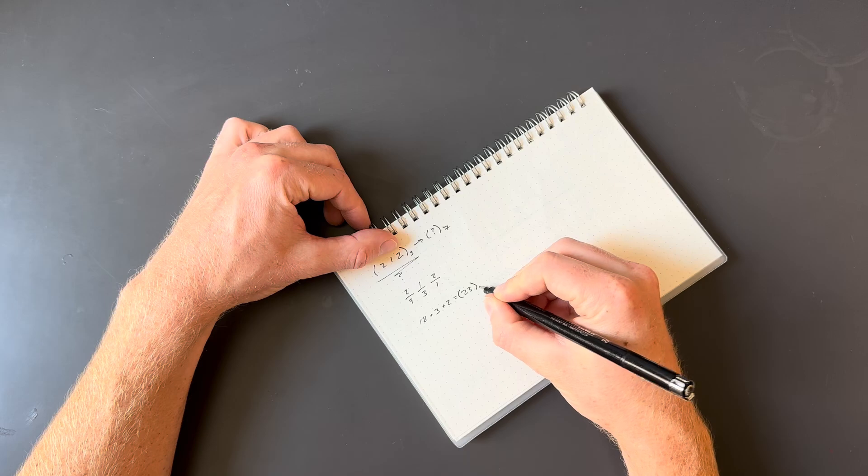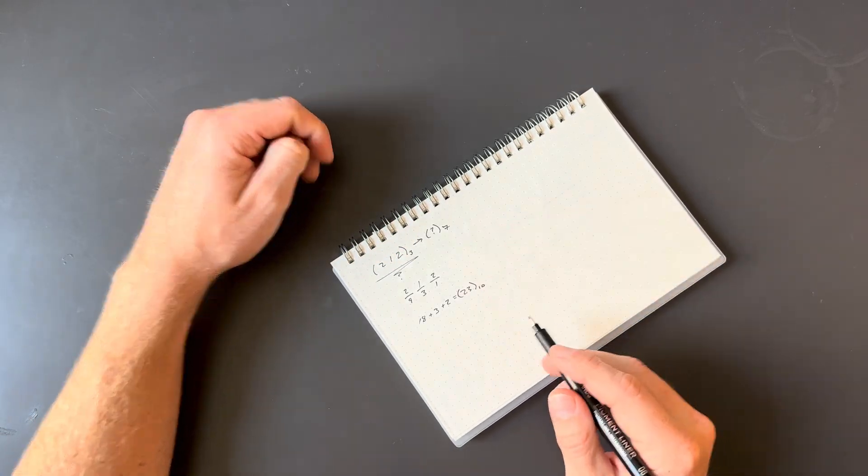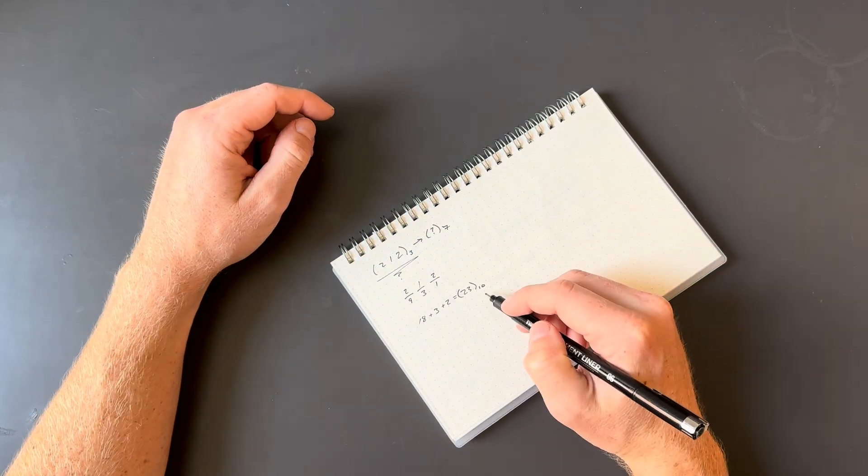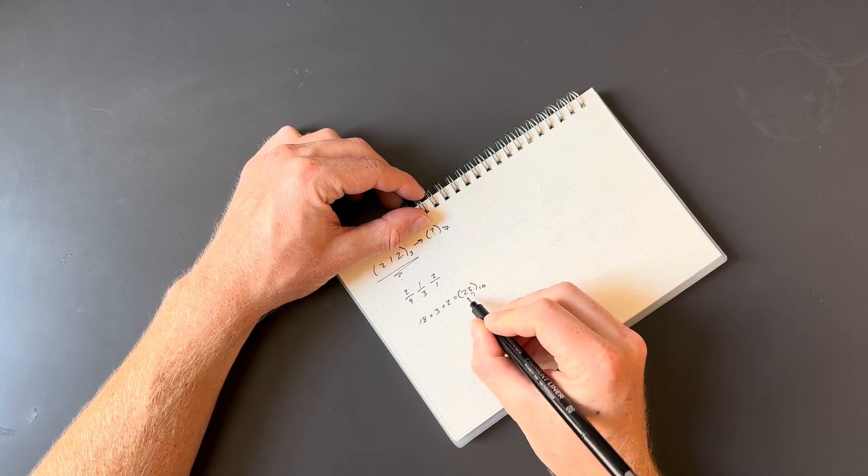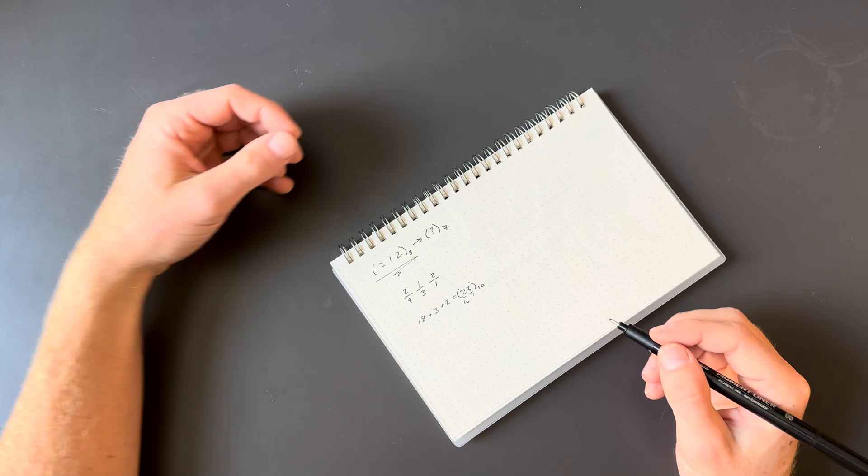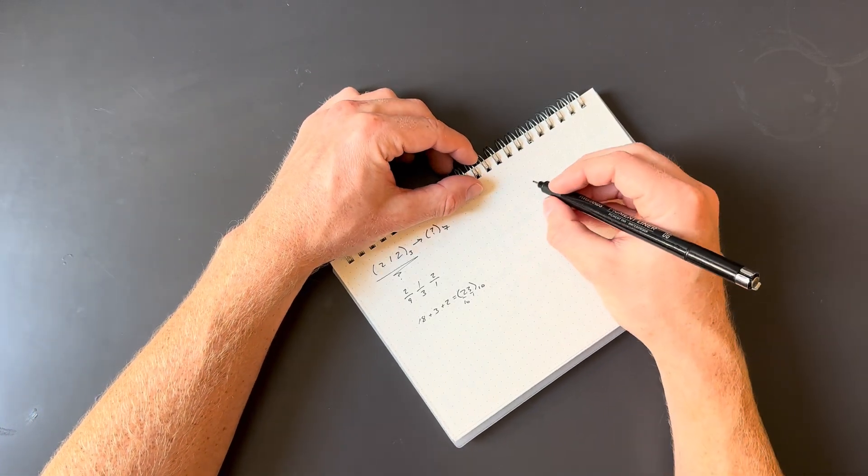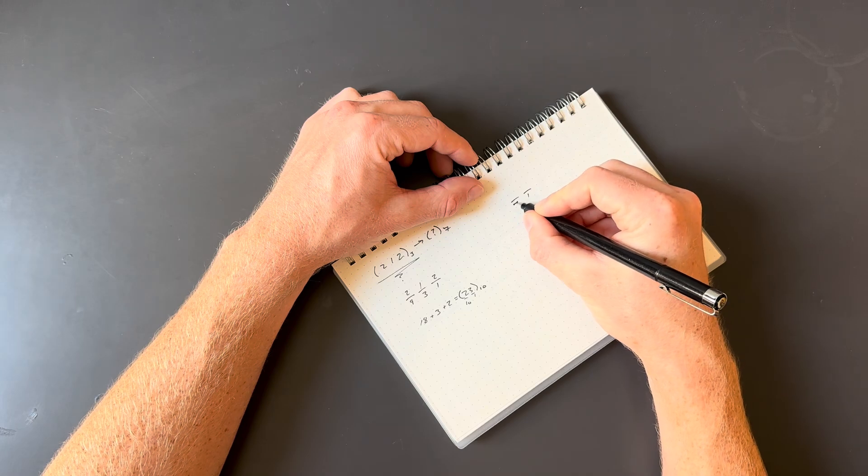Now that is our decimal representation of this number. From here, we can use a similar process to get from the decimal system to base 7. So in base 10, obviously, we have a 1s place and a 10s place. But we want to figure out what this number is in base 7. So in the base 7 system, we have a 1s place, followed by a 7s place.